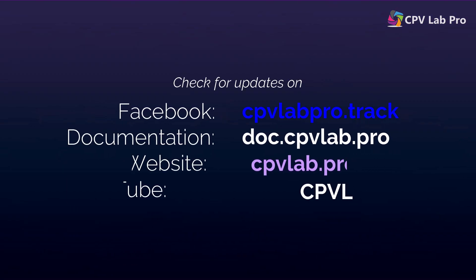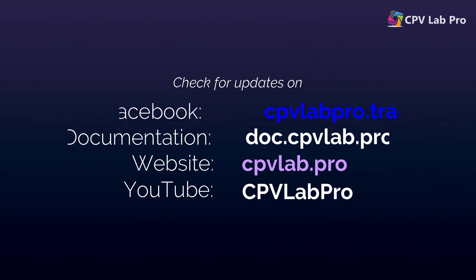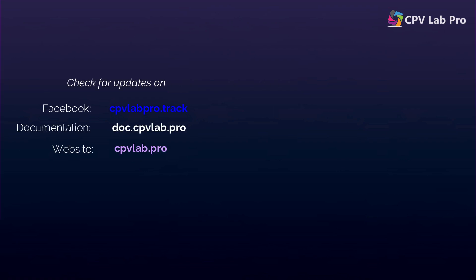These are the details about tracking pixels and postback URLs. I hope they were useful. If you have any questions, feel free to write a comment below or contact the CPV Lab Pro support team. In the next video I will show you how to pass the conversion payout or revenue from your offer source to CPV Lab Pro, which is very useful when you have variable payouts from your offers. Until then, have a good day and profitable campaigns.